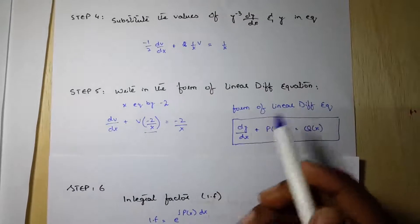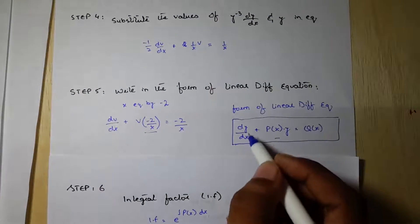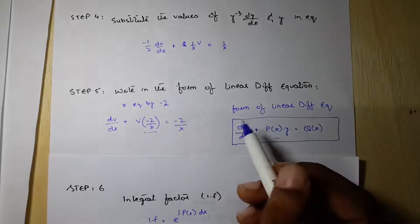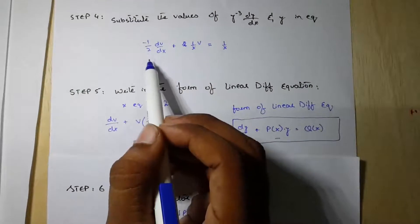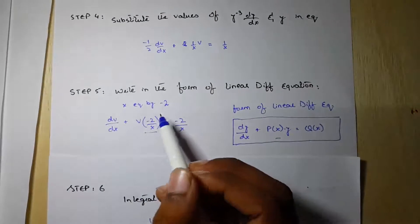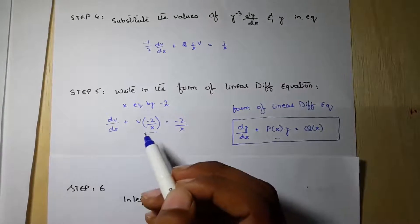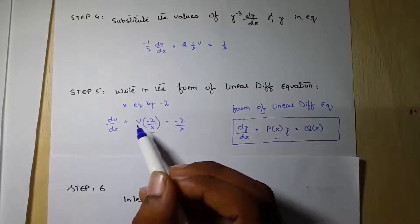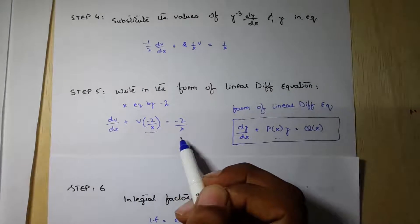Step 5: write in the form of a linear differential equation. The form is dy/dx plus a function of x times y equal to a function of x. As you can see there is a minus 1/2 coefficient; to eliminate it, I am multiplying the equation by minus 2. So the new equation will be dv/dx plus (−2/x)v equal to −2/x.